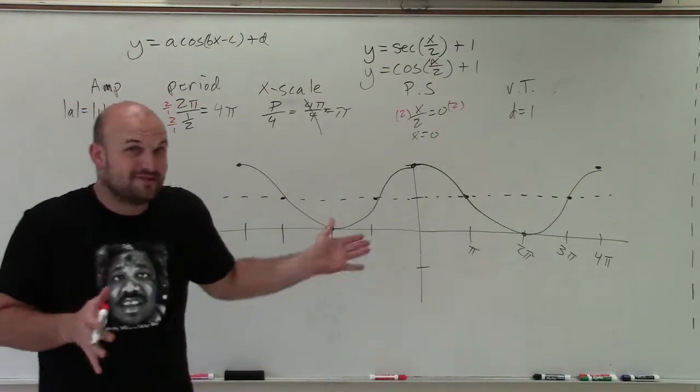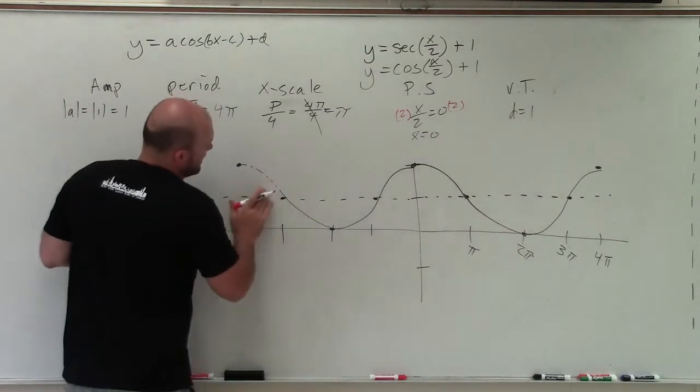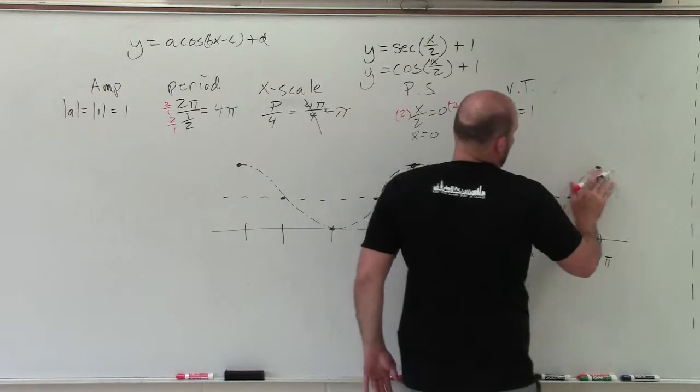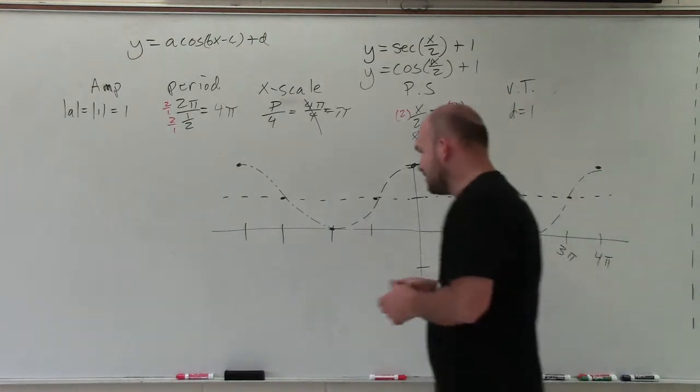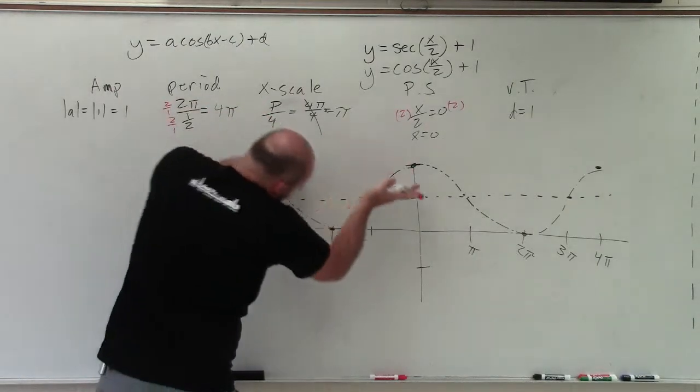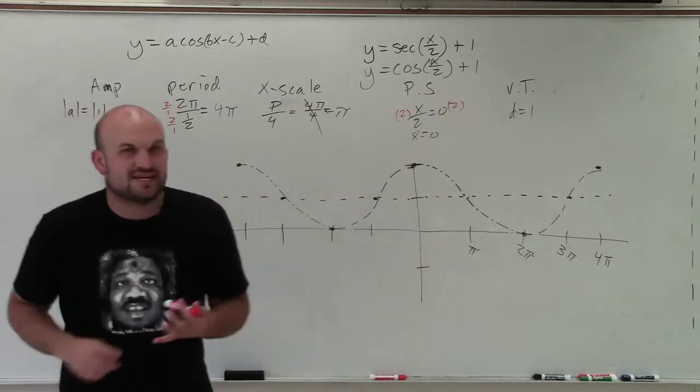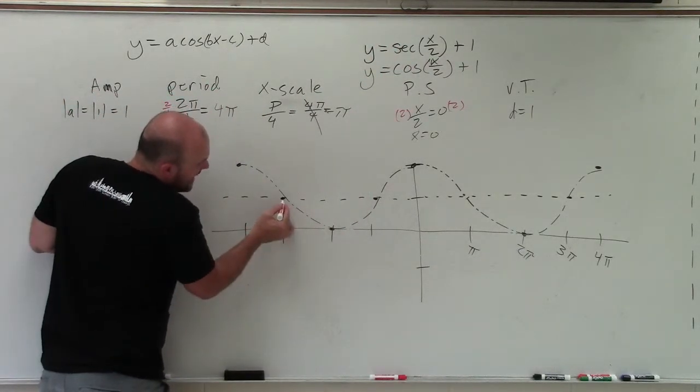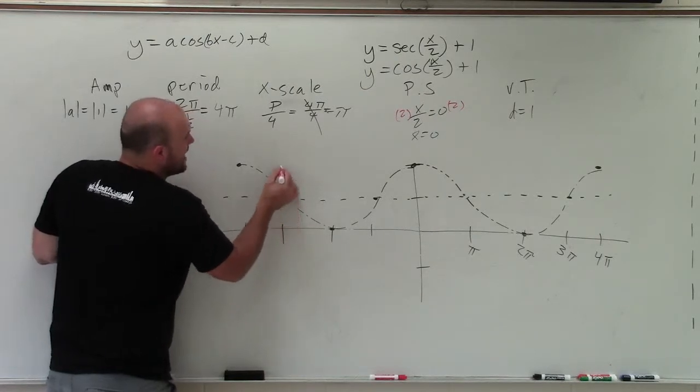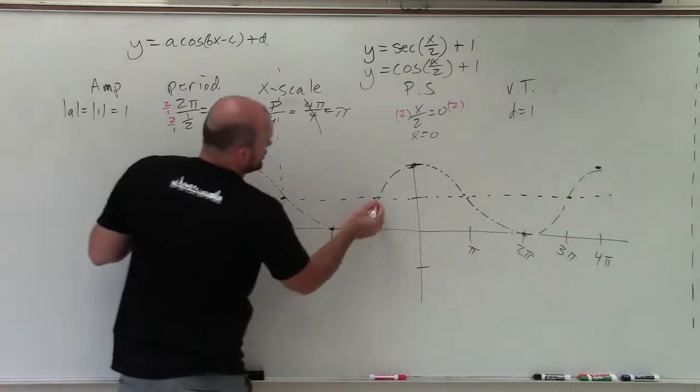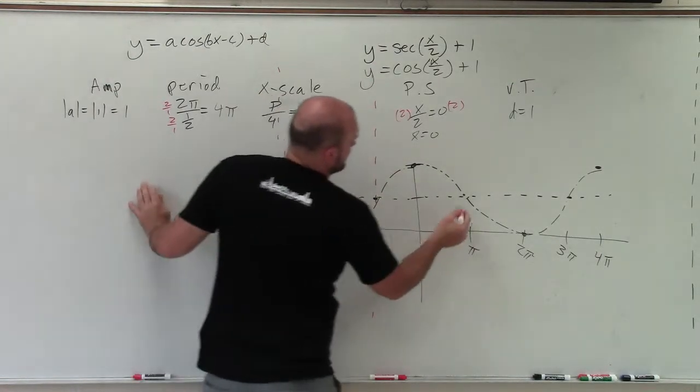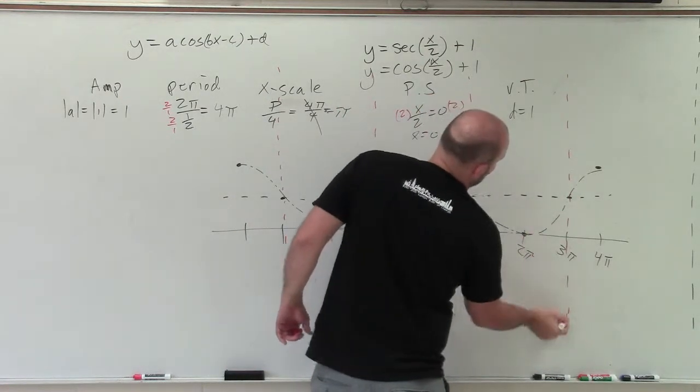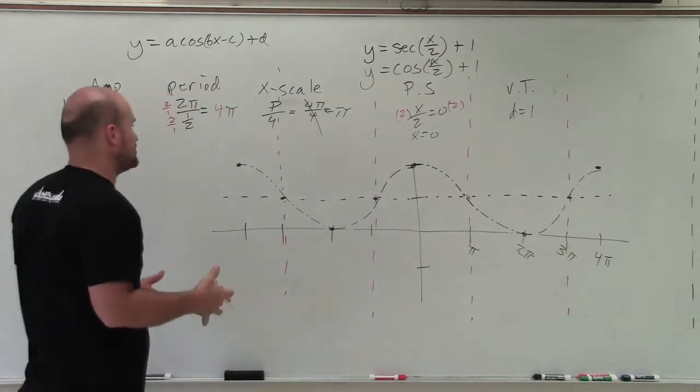Now, the important thing, though, is we're not graphing cosine of x divided by 2. We want to graph secant. So what I'm going to do is now I'm going to dot this graph. Because we are only concerned about the secant graph. Now, if you remember, where the graph intersects the x-axis produces an asymptote for the reciprocal function. So therefore, if I was going to shift this down, you can see at this value, I would have an intercept. So that is where my asymptote is going to occur for the secant graph. Because for the secant graph and the cosecant graph,